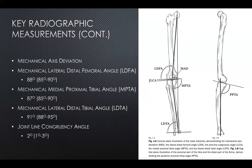Other radiographic measurements to quantify lower extremity malalignment include mechanical axis deviation, the mechanical lateral distal femoral angle (LDFA), and the mechanical medial proximal tibial angle (MPTA). An MPTA less than 85 degrees constitutes a varus deformity. For the LDFA, anything greater than 90 degrees constitutes a varus deformity in the distal femur.